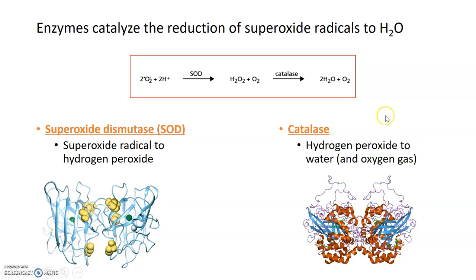One thing that makes the reduction of oxygen gas to water so efficient is that two enzymes are involved in the process. The first takes superoxide radicals and hydrogen atoms and reduces superoxide radicals to hydrogen peroxide. That enzyme is known as superoxide dismutase, or SOD. You can see the structure of superoxide dismutase here. SOD is actually mutated in the neurodegenerative disease ALS.